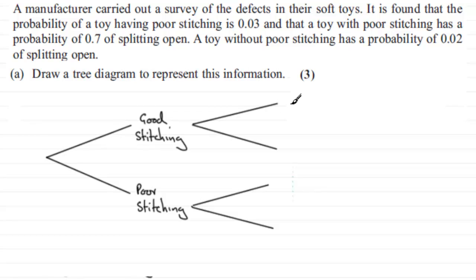So we can say that the toy will either split open, and we can say here that it does not split open. So we'll just say not split open. Quite a lot to write, but there we go. So split open again, and we've got not split open.